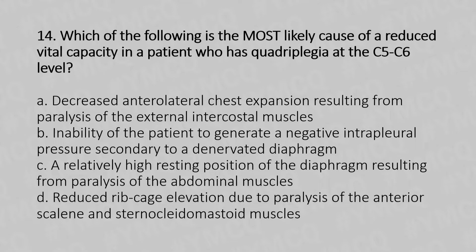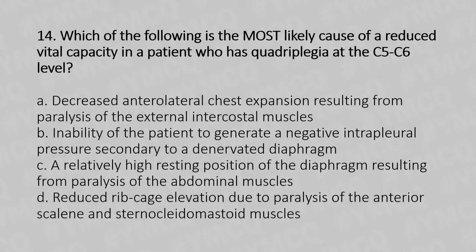Moving to our 14th question. Which of the following is the most likely cause of reduced vital capacity in a patient who has quadriplegia at the C5-C6 level? Option A: decreased anterior-lateral chest expansion resulting from paralysis of the external intercostal muscles, Option B: inability of the patient to generate negative intrapleural pressure secondary to a denervated diaphragm, Option C: a relatively high resting position of the diaphragm resulting from paralysis of the abdominal muscles, Option D: reduced ribcage elevation due to paralysis of the anterior scaleni and sternocleidomastoid muscle.